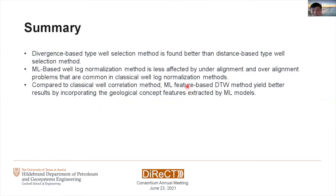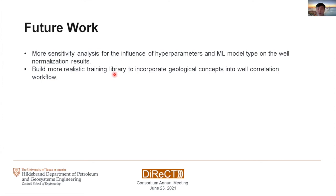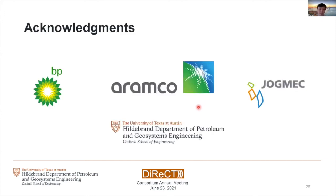To summarize: the divergence-based type well selection method is found to be much better than the distance-based method. The machine learning based well normalization method is less affected by under- or over-alignment problems. Compared to classical well correlation methods, the machine learning feature-based approach gives better results by incorporating geological concepts into the workflow. In the future, we will perform more sensitivity analysis for our random forest models and build more realistic training libraries to further incorporate geological concepts. We thank all our sponsors for supporting this project.